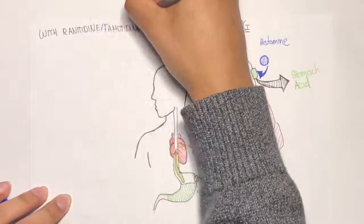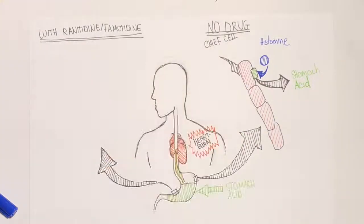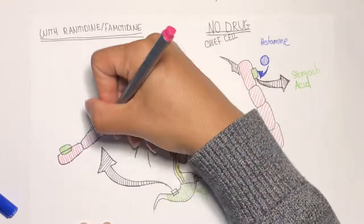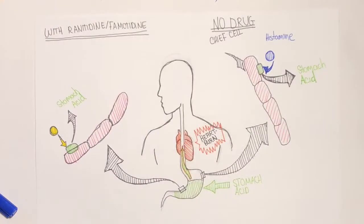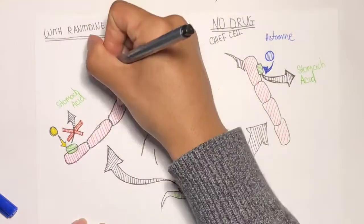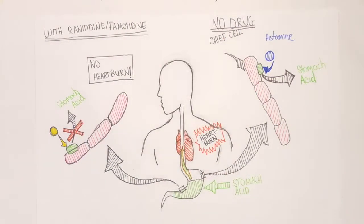That's where Zantac and Pepcid come in. The special chemicals in the drugs will attach to the acid producing factories and block histamine. So instead of producing stomach acid, nothing happens. Less stomach acid means less heartburn.